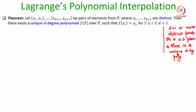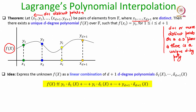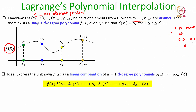The statement of the theorem is as follows. You are given d+1 distinct points, where distinct means the x-components are all distinct. The statement says there exists a unique polynomial f(x) of degree d which passes through the given d+1 points. The idea behind the proof is that given d+1 distinct points we can compute the unknown d-degree polynomial f(x).